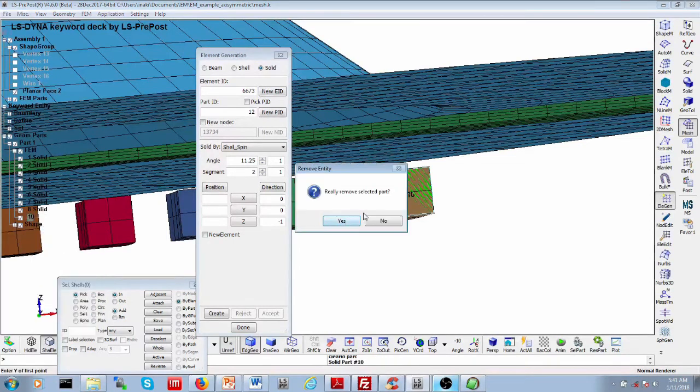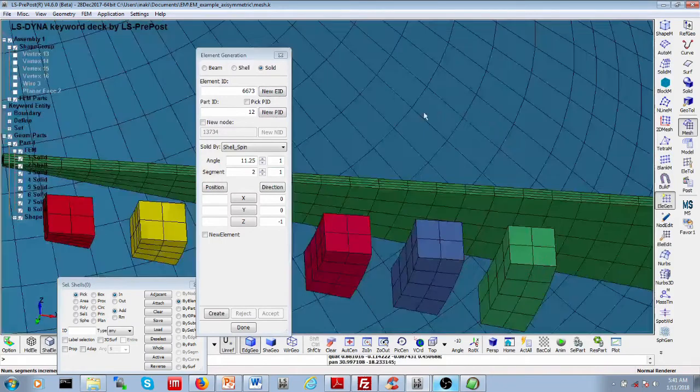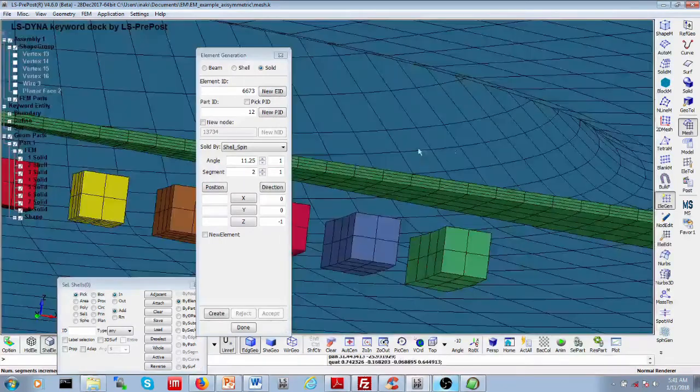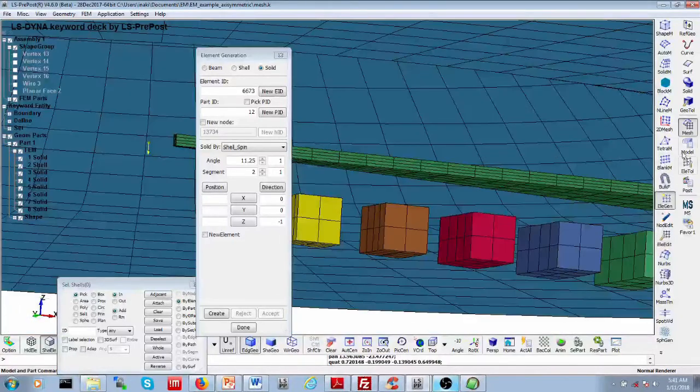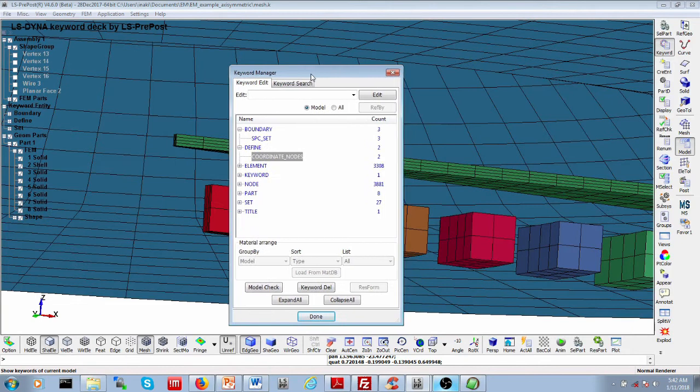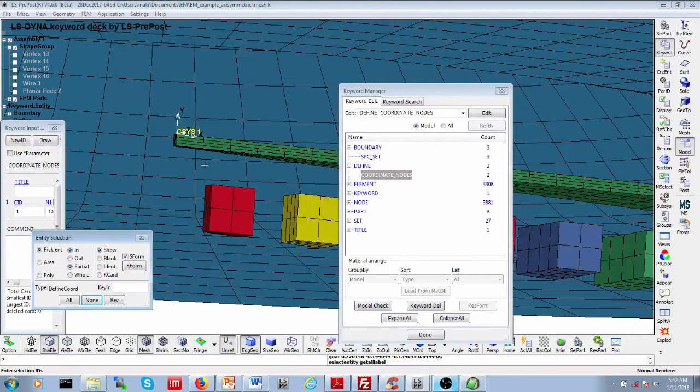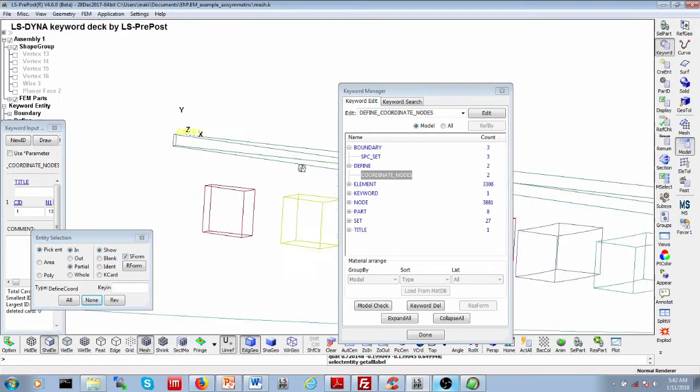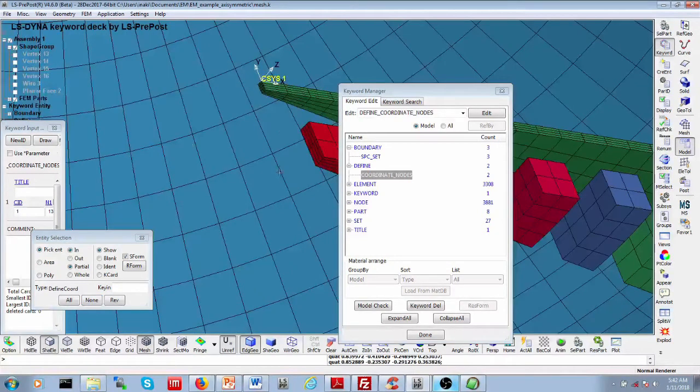A couple of other things that I'd like you to pay attention to. On the solid side, you also need to specify the correct boundary conditions. So, you need to define, if you go here in the keyword section, you need to define coordinate nodes, to define a local reference frame, so you can define the correct boundary condition on this local reference frame, on both the two faces here, on the two sides of your axisymmetric part here. This is on the structural side.